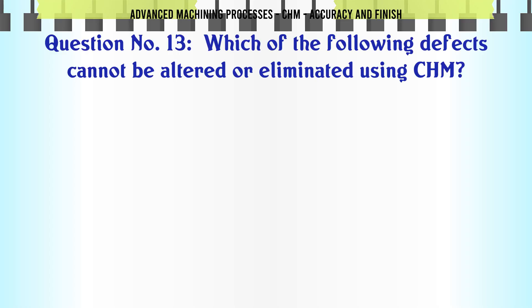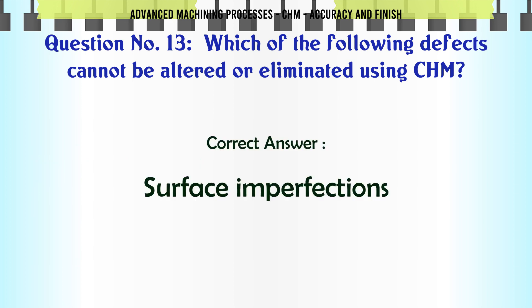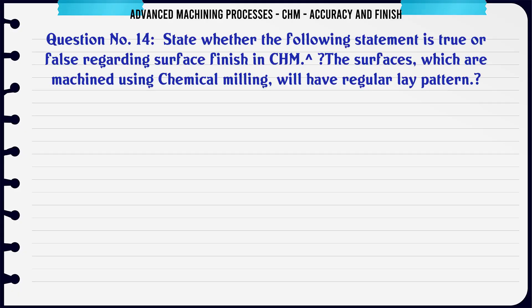Which of the following defects cannot be altered or eliminated using CHM? A. Waviness. B. Surface imperfections. C. Scratches. D. Dents. The correct answer is surface imperfections.